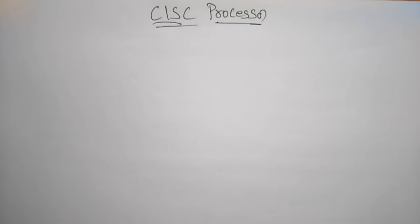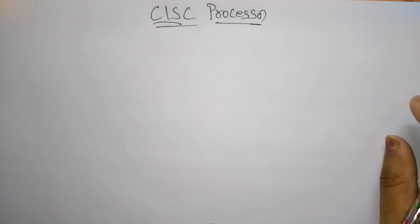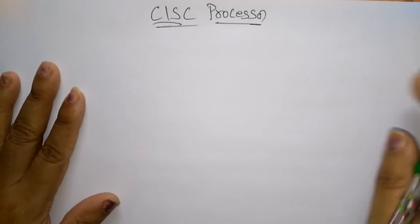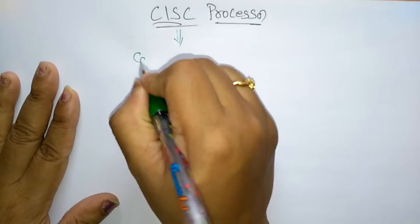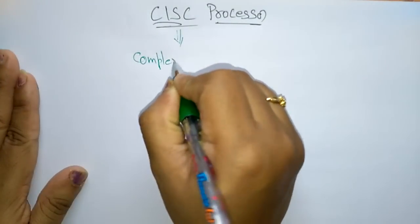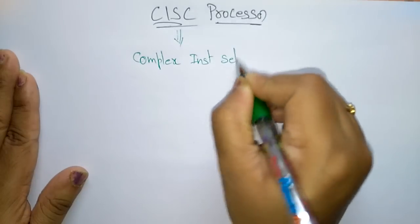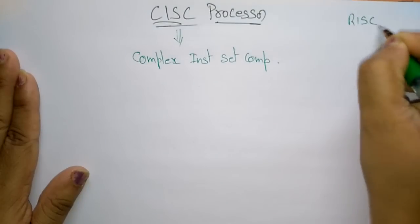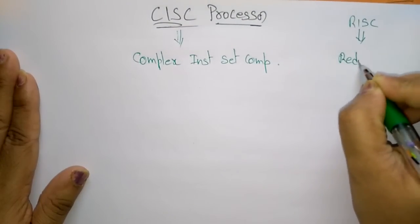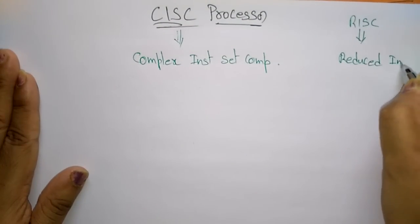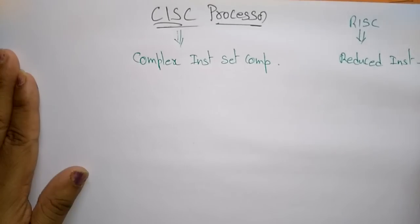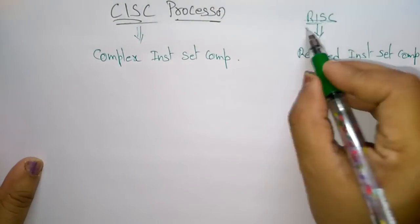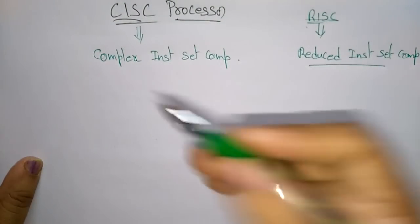Let us continue with the next topic in computer organization and architecture: the CISC processor. In the previous video I explained about the RISC processor. CISC stands for Complex Instruction Set Computer, whereas RISC stands for Reduced Instruction Set Computer. The name itself says that RISC has a reduced instruction set, whereas CISC has a complex instruction set.